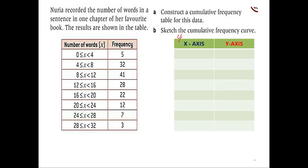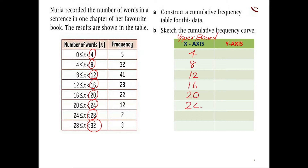As given in the introduction, we know the x-axis is going to be the upper bound of your class interval. Here this is the class interval that you have, and the upper bound is 4, 8, 12, 16, 20, 24, 28, and 32. So this is going to be your x-axis — let me just mark it here: 4, 8, 12, 16, 20, 24, 28, and 32.